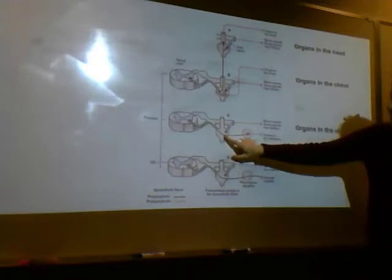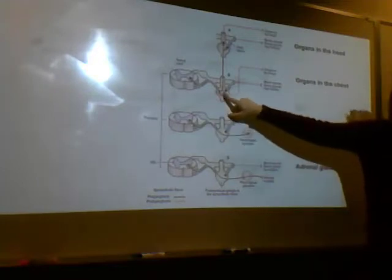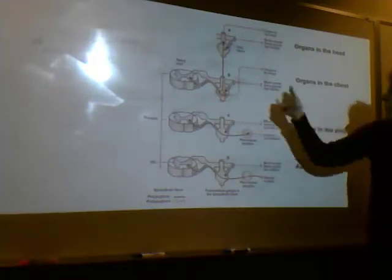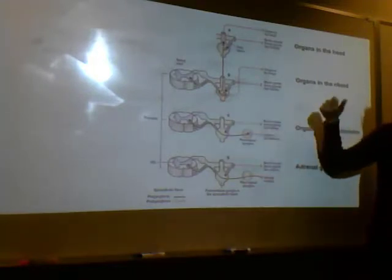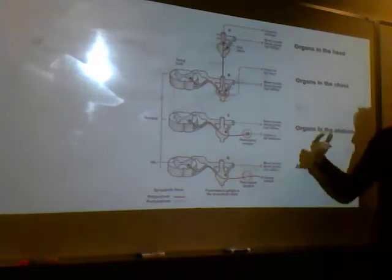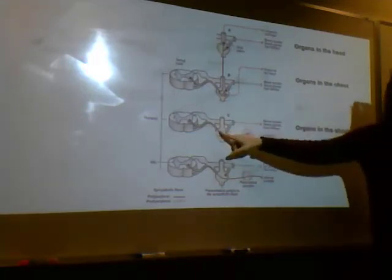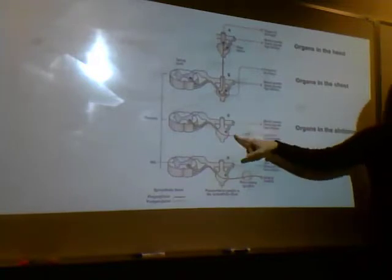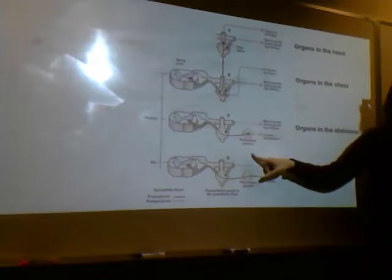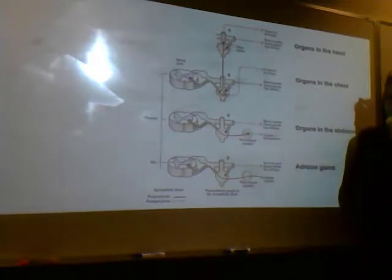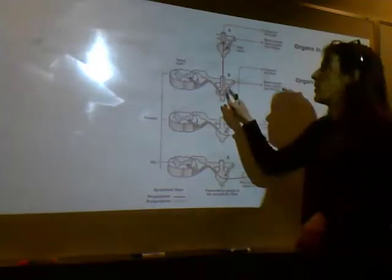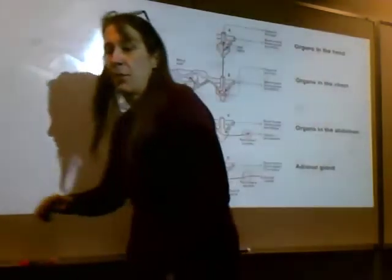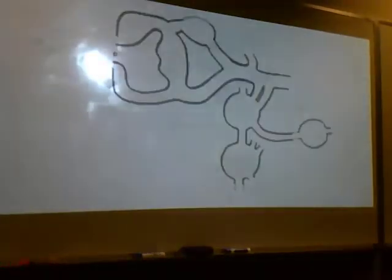Sometimes, for example, these fibers stop in the sympathetic chain ganglia if we're looking at the chest. But if we're going to the abdomen, we don't stop in the chain ganglia — we stop in our collateral ganglia. So what's going to vary is the ganglia they use and the different parts of the spinal cord.